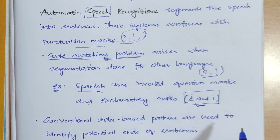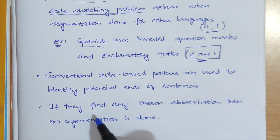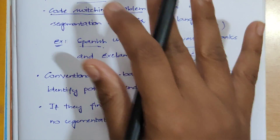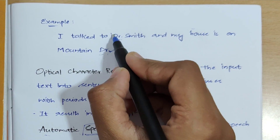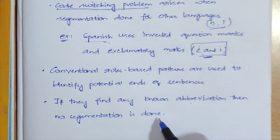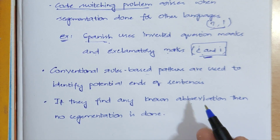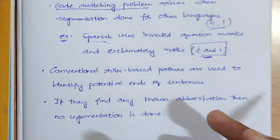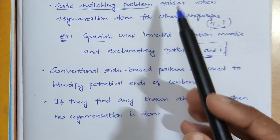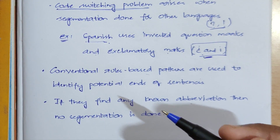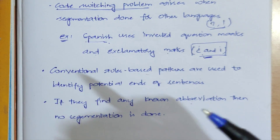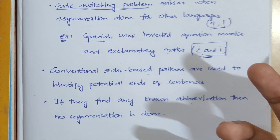Different rule-based patterns are also used to identify the end of a sentence. If the system finds a known abbreviation, no segmentation is done at that point. In the previous example, the system already knows 'Dr.' is an abbreviation, so it doesn't segment there. When it doesn't recognize a word as an abbreviation, it performs segmentation. These systems mainly recognize abbreviations by being trained on a large amount of documents.